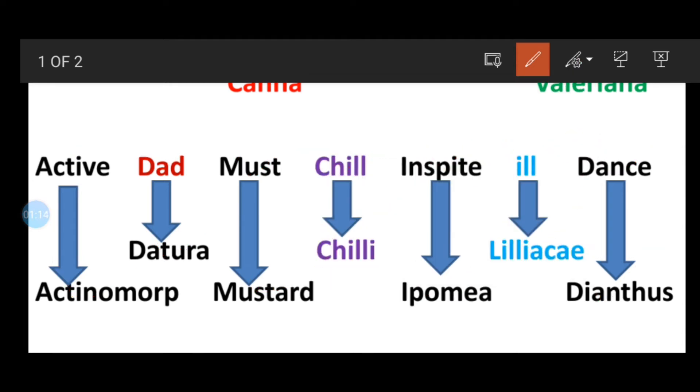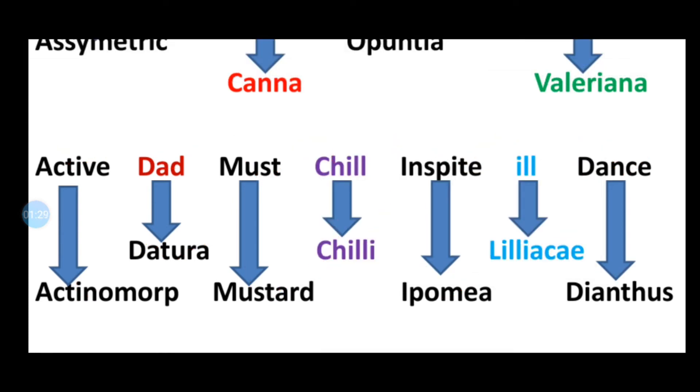So I am repeating again: active actinomorphic, dad Datura, must mustard, chill chili, in spite Ipomoea, ill Liliaceae, and dance Dianthus. So these are the examples of actinomorphic symmetry of the flower.